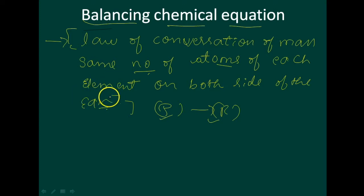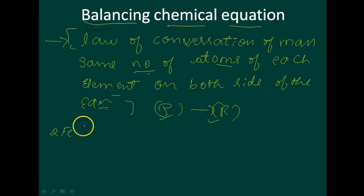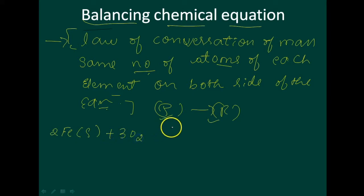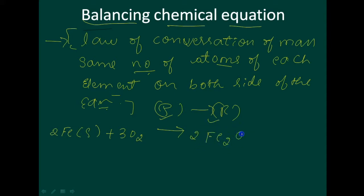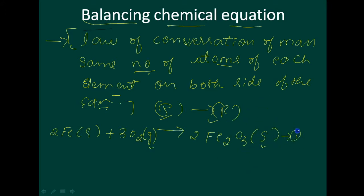Let us consider the reactions of few metals and non-metals with oxygen to give the oxides. So 2 Fe — iron — when reacted with oxygen gives 2 Fe₂O₃. Where 's' means solid and 'g' means gas. This equation is a balanced equation.